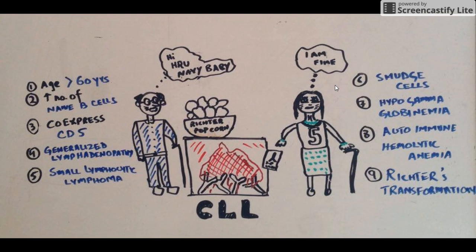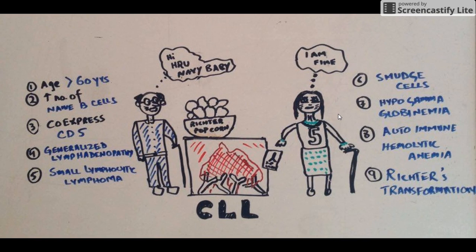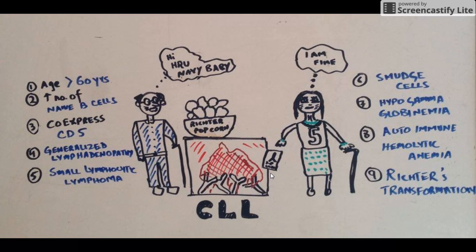What are the consequences of these abnormal-functioning but normal-looking lymphocytes? As they are B lymphocytes that have gone nuts, their capacity to produce immunoglobulins is lost. These lymphocytes will not be able to make immunoglobulins, leading to hypogammaglobulinemia. This is shown by the packet of popcorn falling from the lady's hand, with an immunoglobulin sign on the popcorn packet.